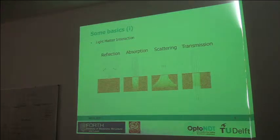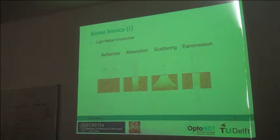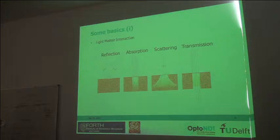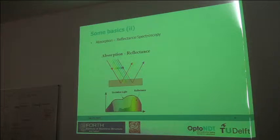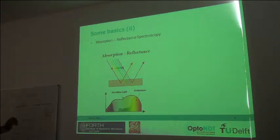Let me cover some basics about what light-matter interactions are responsible for the spectral imaging technique. We have detection, where light is detected by the surface of the sample. We have absorption, where photons are absorbed by the sample tissue. We have scattering, where light is not absorbed but scattered inside the material. And transmission, where light is detected from the other side. We will focus mainly on absorption and reflectance, where some light is reflected back to our sensors containing information about the sample.